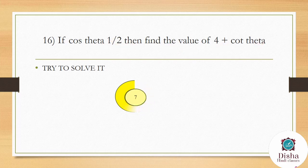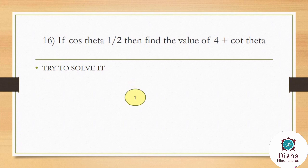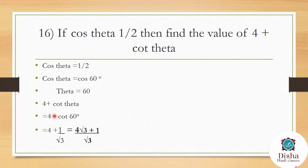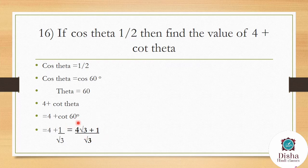If cos θ = 1/2, find the value of 4 + cot θ. From the trigonometric table, cos 60° = 1/2, so θ = 60°. Now find 4 + cot 60°. The value of cot 60° = 1/√3. So 4 + 1/√3 = (4√3 + 1)/√3. Therefore the value of 4 + cot θ = (4√3 + 1)/√3.